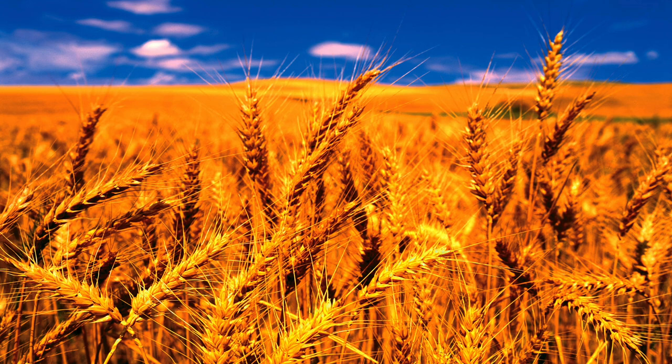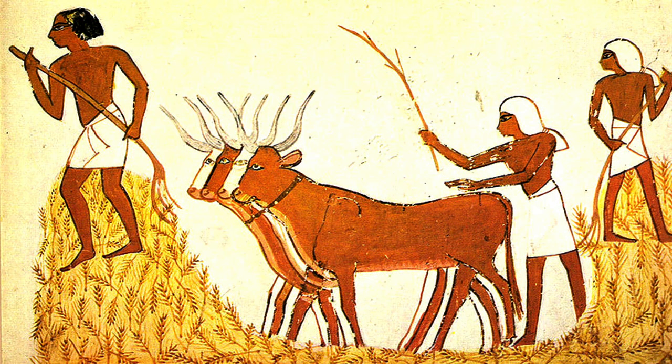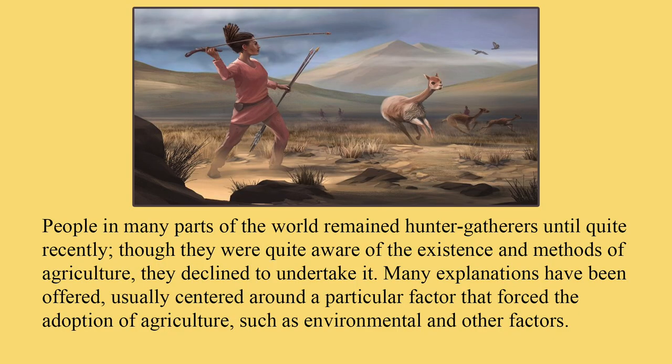Archaeological studies show that health deteriorated in populations that adopted cereal agriculture, returning to pre-agricultural levels only in modern times. This is in part attributed to the spread of infections in crowded cities, but it is largely due to a decline in dietary quality that accompanied intensive cereal farming. People in many parts of the world remained hunter-gatherers until quite recently. Though they were quite aware of the existence and methods of agriculture, they declined to undertake it, with many explanations centered around particular factors that forced the adoption of agriculture, such as environmental and other factors.